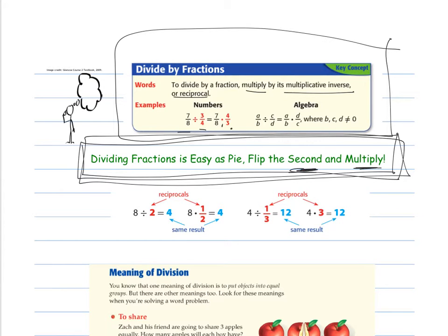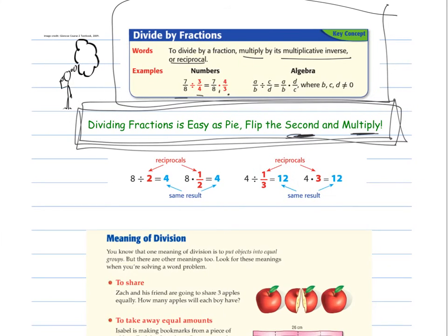Why this works. So if you think about the meaning of division. So eight divided by two, if I split eight into two, I get four in each group. If I were to say what is half of eight, that's four. So notice it's the same result when dividing by two and when multiplying by two's reciprocal. Same thing here. Dividing by one-third and multiplying by three. Same result.